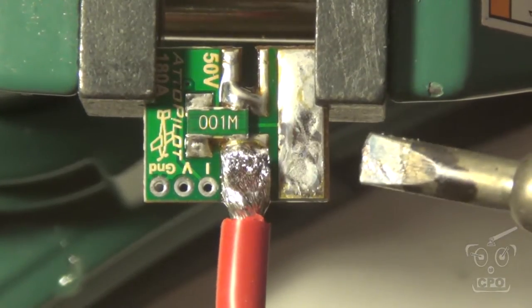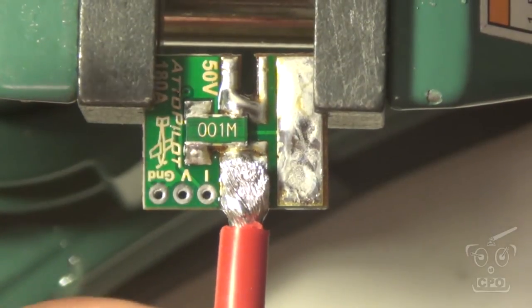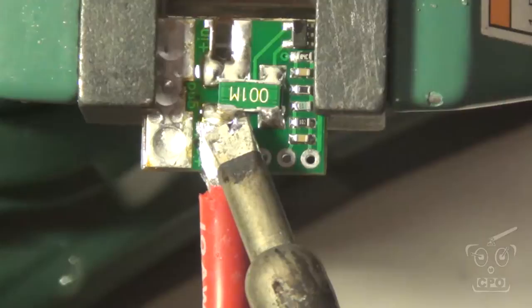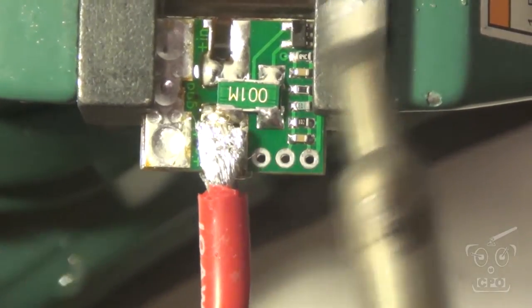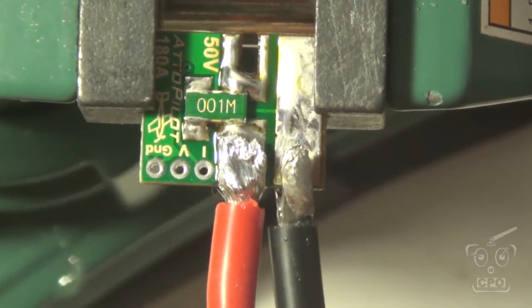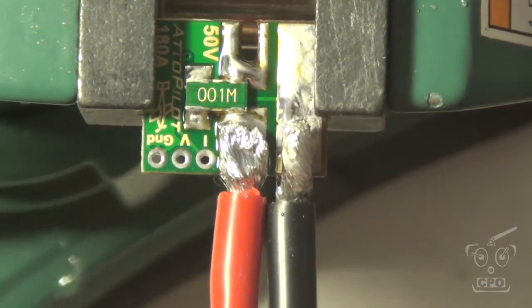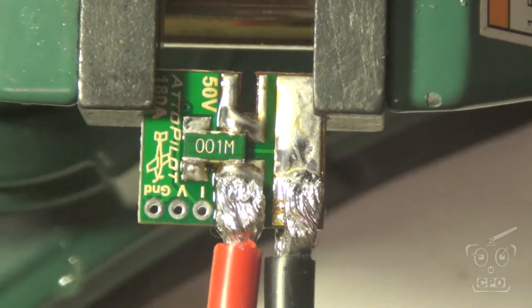So I'm just going to add the short positive side. This is from the side that's going to go to the power distribution board. And this is going to be coming from the side with the three holes for the voltage, current, and ground that go to the Pixhawk.